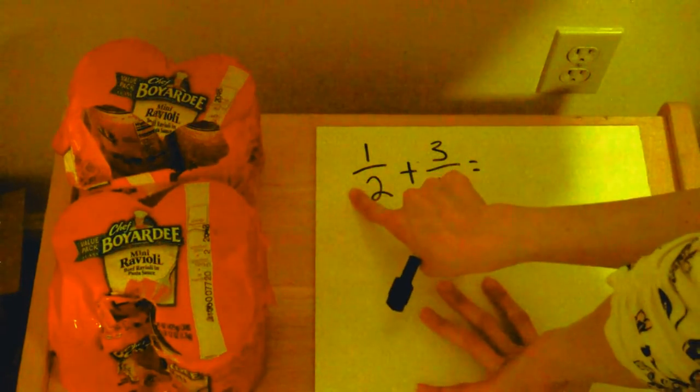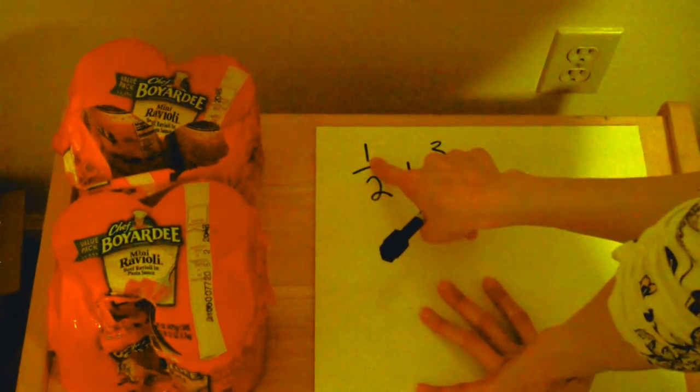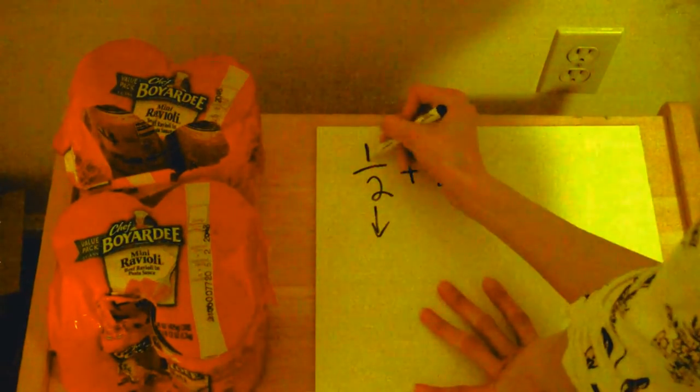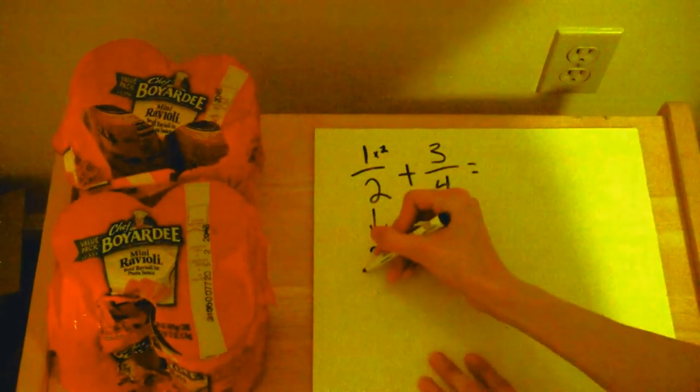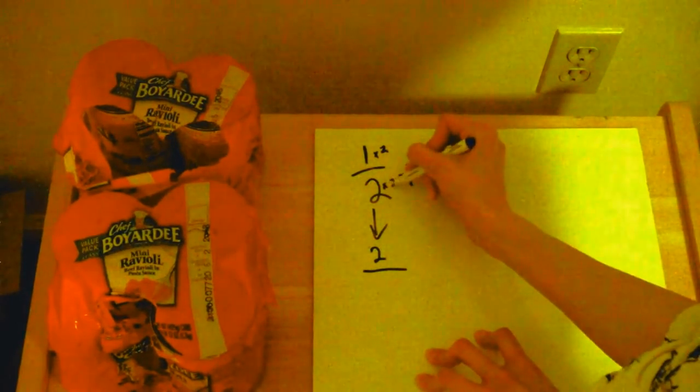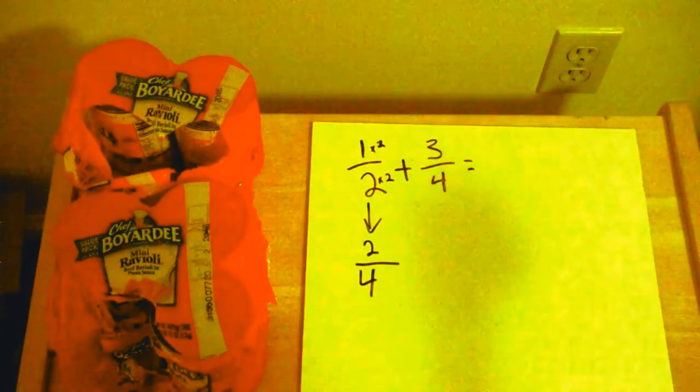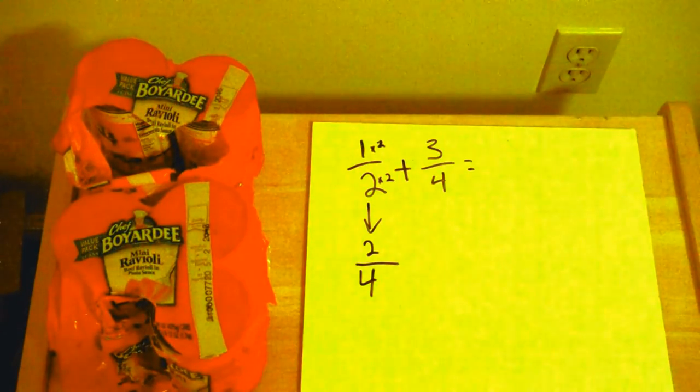So let's go ahead and take this half, multiply the top number by two and the bottom number by two. So one times two is two and two times two is four. So one half is the same as two-fourths. You could have even done that mentally.